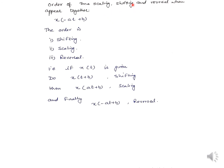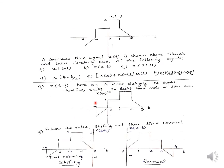When time scaling, shifting, and reversal appear together, always remember the order: you have to shift the signal first. So the first signal you find is X(T+B). Then scaling — you scale by factor A to get X(AT+B). And the third step is time reversal, giving X(-AT+B). So the order is: shift first to get X(T+B), then scale to get X(AT+B), and finally apply reversal to get X(-AT+B).